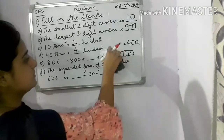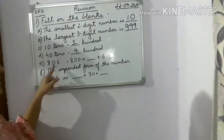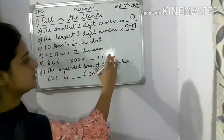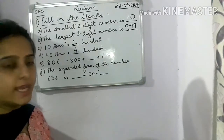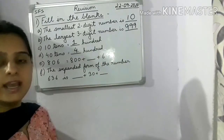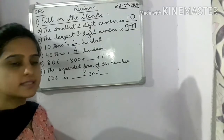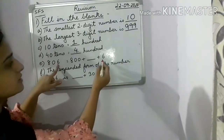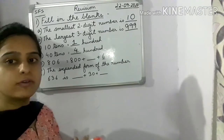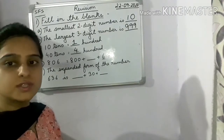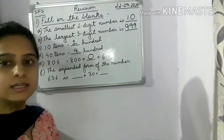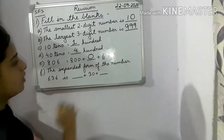Next, E: 806 is equal to 800 plus dash plus 6. This is the expanded form. When we expand a number, we put a plus sign and expand according to place value. 6 is in the ones place, so its value is 6. 0 is in the tens place — the value of 0 remains 0. So the answer is 0.